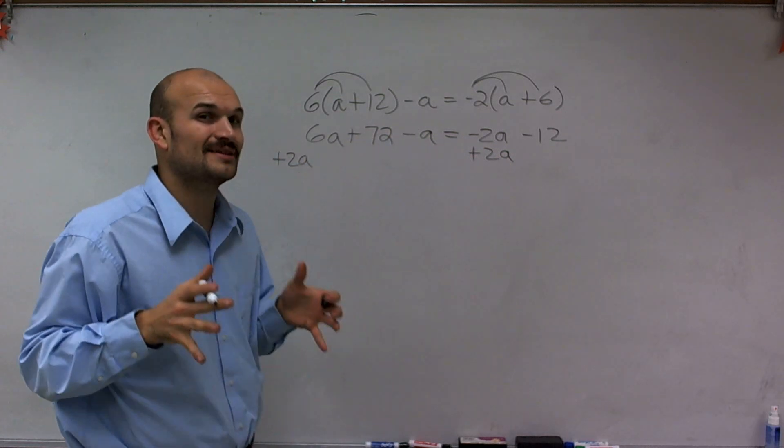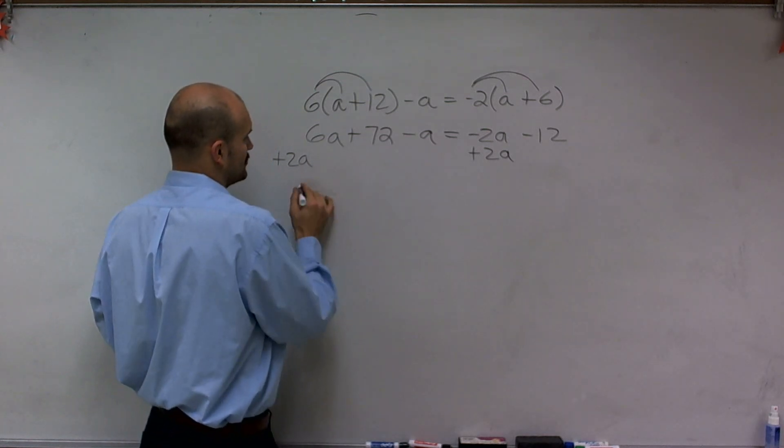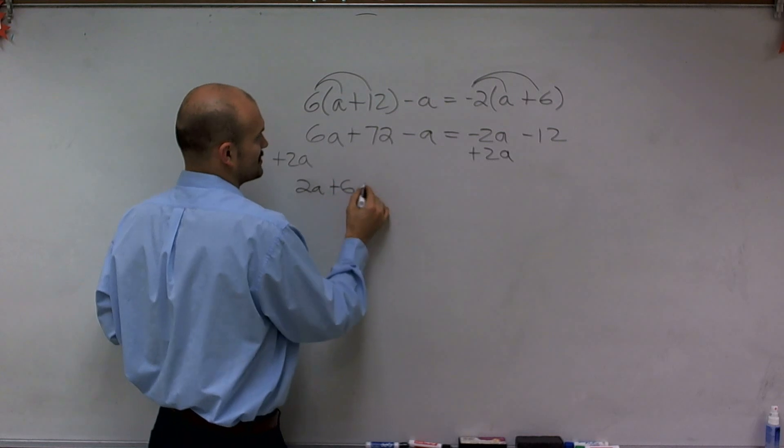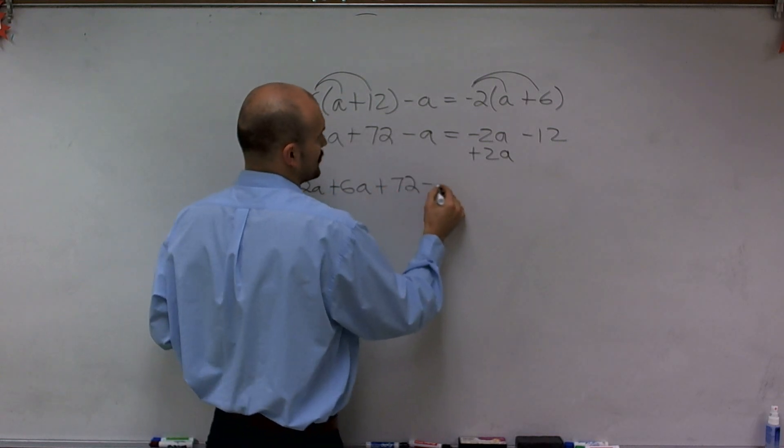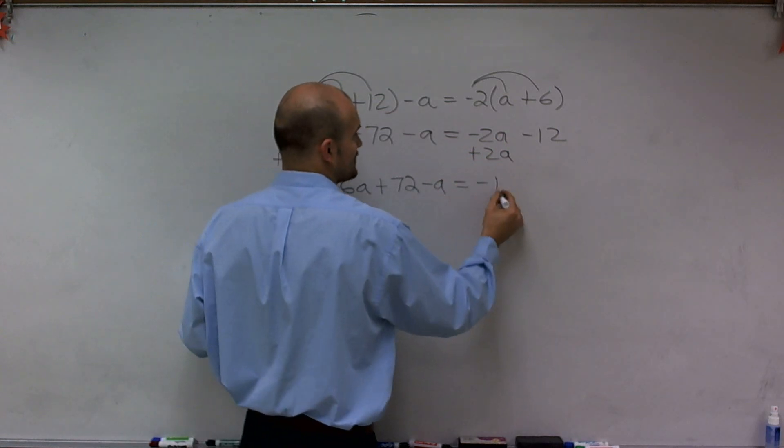I could do this in a couple faster steps, but I'm going to kind of take this step by step for you. So therefore, I'll have 2a plus 6a plus 72 minus a equals, now negative 2a plus 2a gives me zero minus 12.